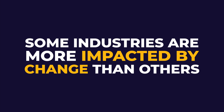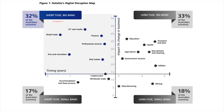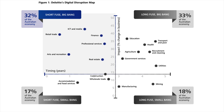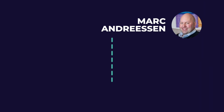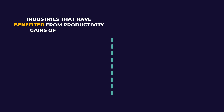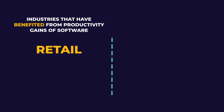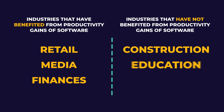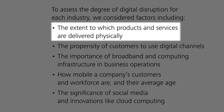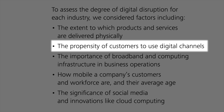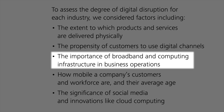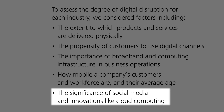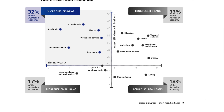Next, we're going to look at Deloitte's digital disruption map, which is quite powerful. Certain industries are more impacted by change at any given time than others. We love this model and their expression 'short fuse, big bang' — a matrix that maps out on one side the potential for disruption and on the other side the timing. Marc Andreessen likes to separate the world into two types of industries: those that have benefited from productivity gains of software (like retail, media, or finance) and those that haven't been totally disrupted yet (like construction, education, or healthcare).